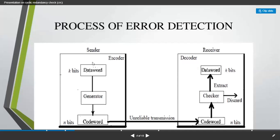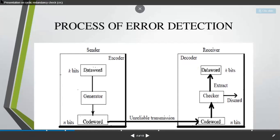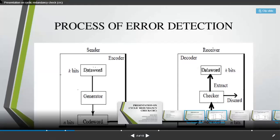Whenever we send from the sender side to the receiver side, we have the data word. All these data words will be of k bits of data. As per your syllabus, you are going to read only eight bits of data. Once you have the data word, you send it through your generator. Once you generate through the generator, you get encoded data — that is nothing but the code word. Let's take it as n bits of data, and that n bits of data you send through your unreliable transmission channel.